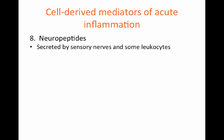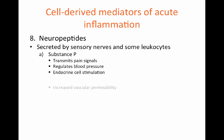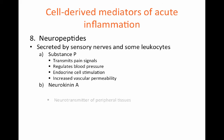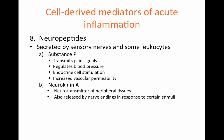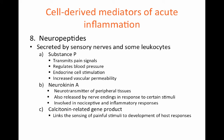Some examples of neuropeptides include substance P, which transmits pain signals, regulates blood pressure, stimulates endocrine cells, and increases vascular permeability. A second example is neurokinin-A, a neurotransmitter of peripheral tissues released by nerve endings in response to certain stimuli, involved in nociceptive or pain stimuli and inflammatory responses. A third neuropeptide is calcitonin gene-related peptide, which links the sensing of painful stimuli to the development of host responses.